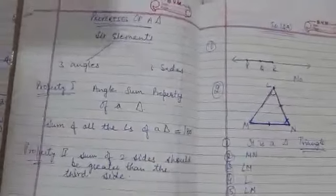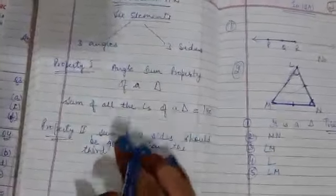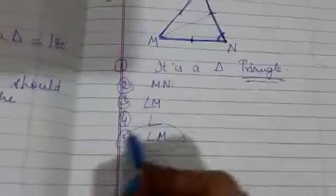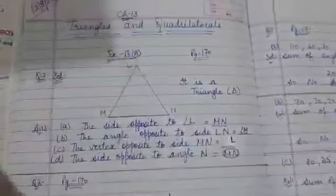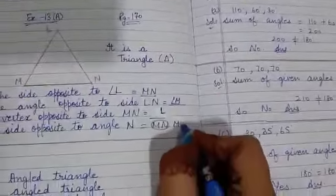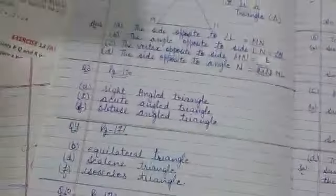Hello students, in this video we will start with the sums of Exercise 13A based on the properties of triangles. Before that, there is a correction in the previous classwork — I explained LM but it should be ML. Please correct that. Now we will start with the next question.